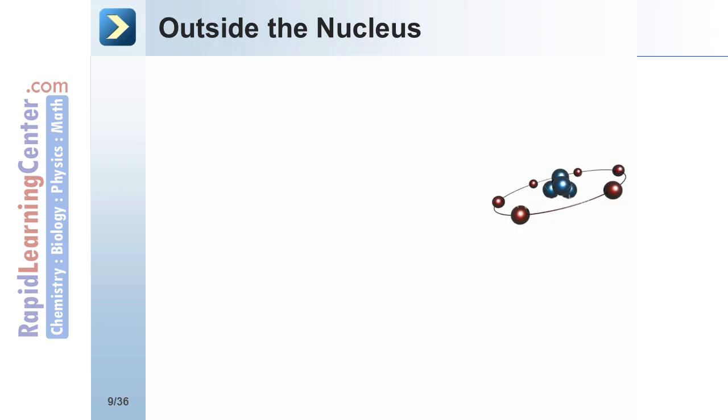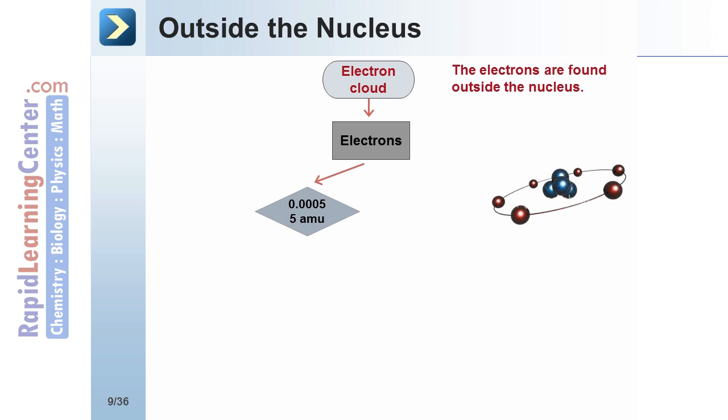Outside the nucleus is the electron cloud. Electrons have a mass of 0.00055 amu. That's only 0.055% of the mass of a proton or neutron. Therefore, this mass is so small compared to the mass in the nucleus that it is insignificant.